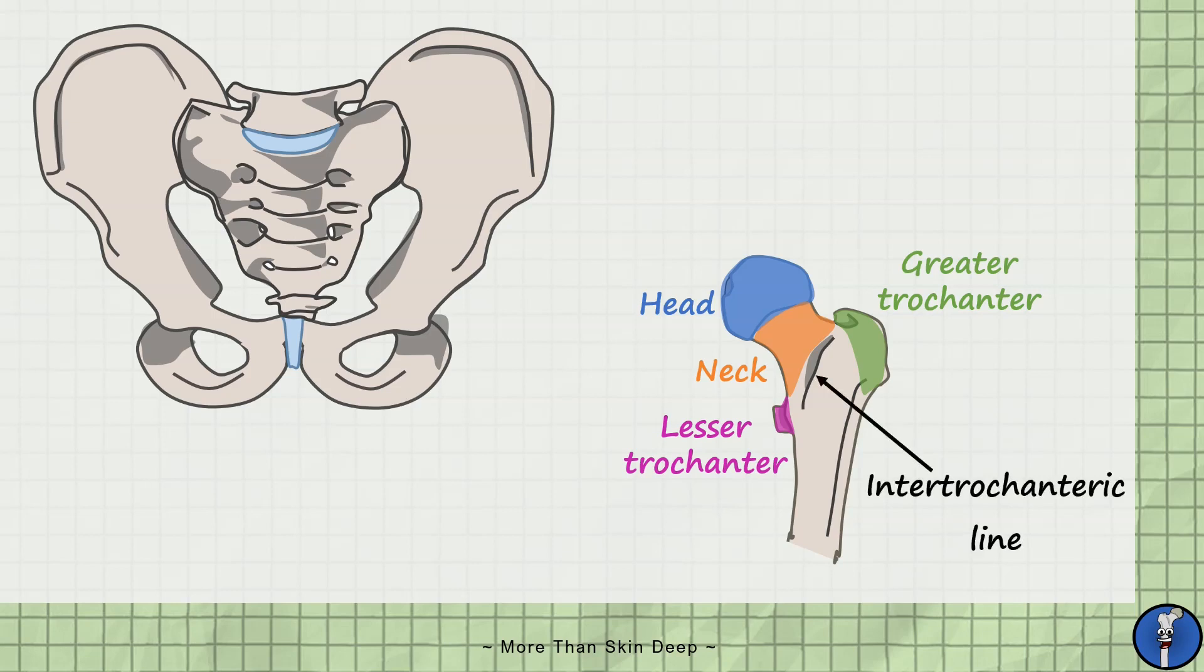The last key feature to note is a small section of missing articular cartilage on the head of the femur. This is known as the fovea and is the point of attachment for one of the hip ligaments.